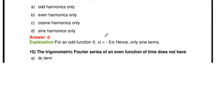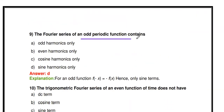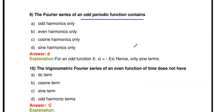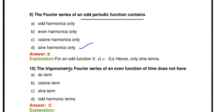Next question: The Fourier Series of an odd periodic function contains which harmonics — odd harmonics only, even harmonics only, cosine harmonics only, or sine harmonics only? If a signal is an odd function, when we express x(t) as a Fourier Series, only sine terms are present: sin(ωt), sin(2ωt), sin(3ωt), etc. So the answer is sine harmonics only.